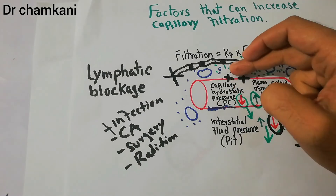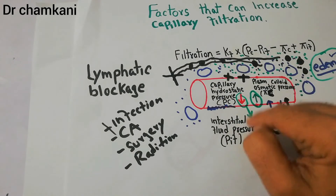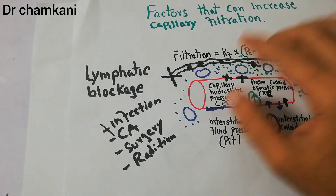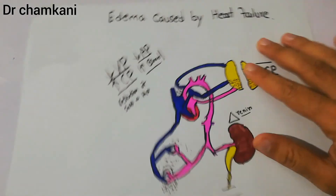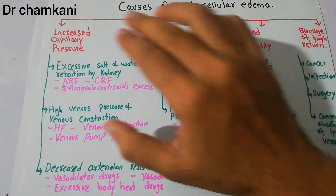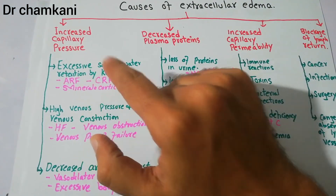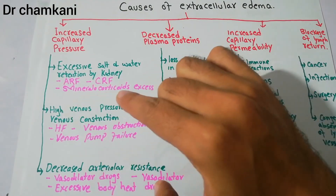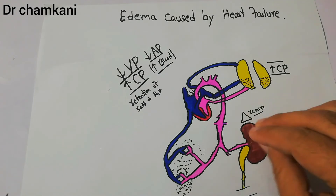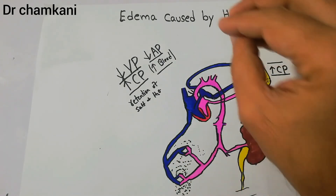Normally, capillary hydrostatic pressure forces fluid out of vessels, while plasma colloid osmotic pressure pulls fluid back into the lumen. Interstitial fluid pressure forces fluid into the capillary lumen, and interstitial fluid colloid osmotic pressure pulls fluid out into the interstitium. In heart failure, the key force that increases is capillary hydrostatic pressure. The causes of increased capillary pressure — including excessive salt and water retention by the kidneys, mineralocorticoid excess, and high venous pressure — are all present in heart failure, and together these factors cause edema in heart failure.